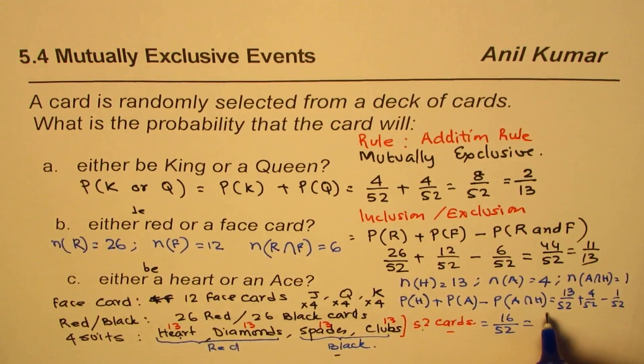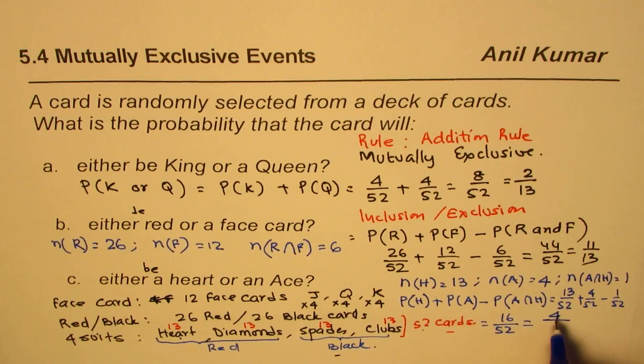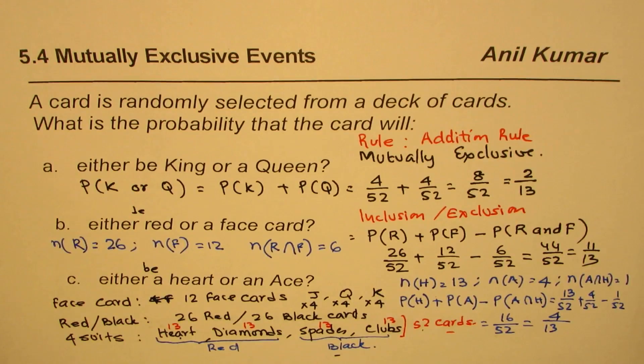We can divide by 4, so 4 times 4 is 16, and 4 times 13 is 52. So 4 over 13 is the solution.